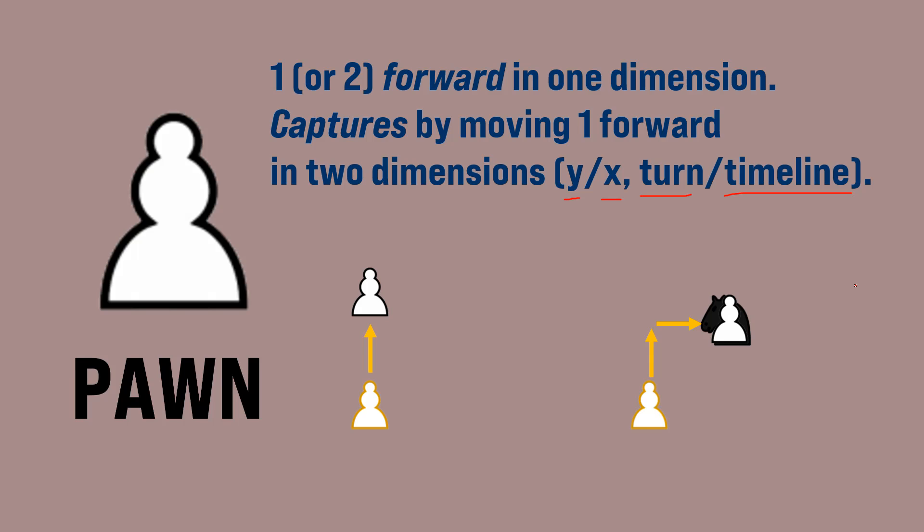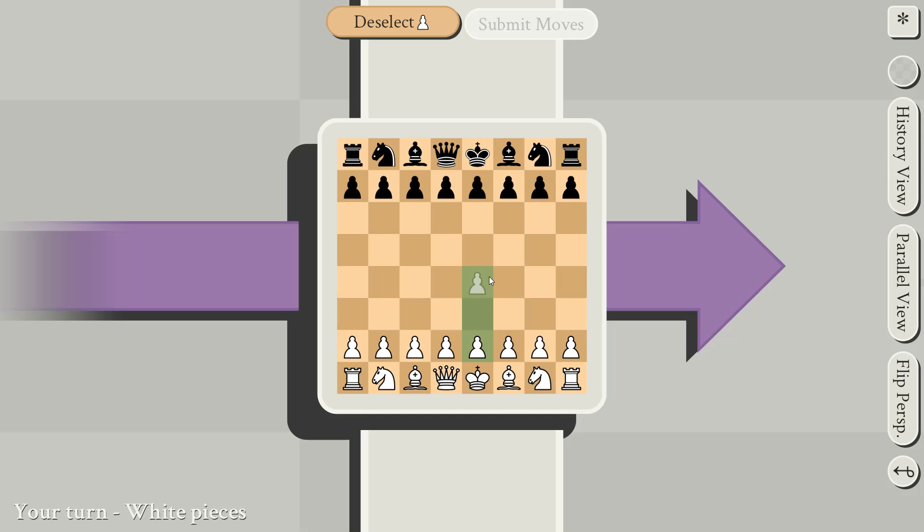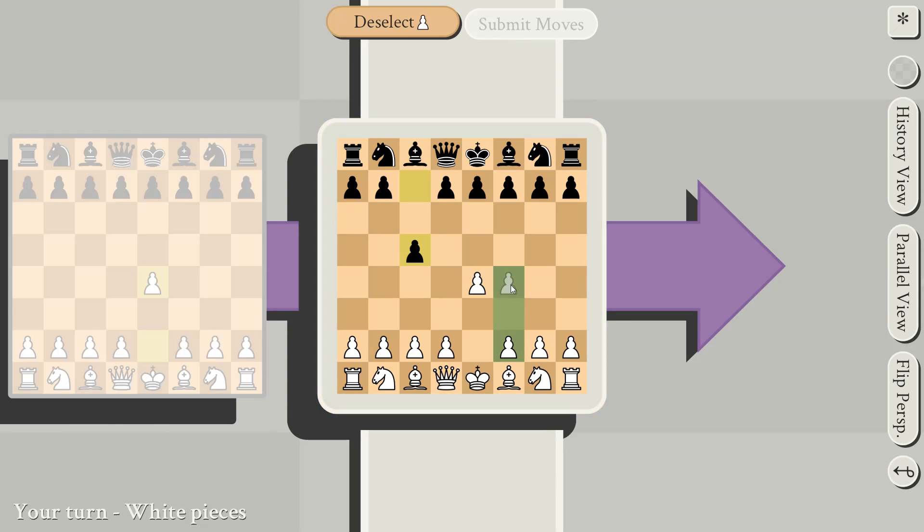Now, let's hop into the game and see how this all works in action. This is the start of the game, and it just works like normal chess. So I can move a pawn forward, black can do the same, and we can just move pieces around as we'd like.